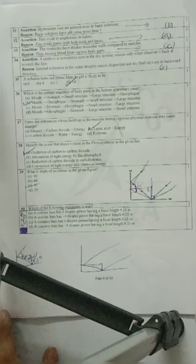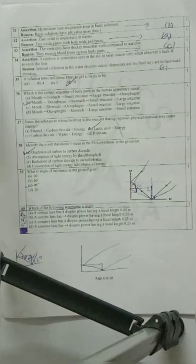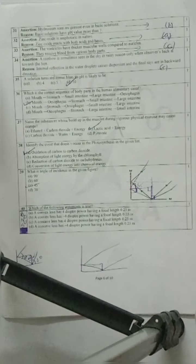Question 32: Assertion - Zinc oxide is amphoteric in nature. Reason - Zinc oxide reacts with both acid and basis. Yes, true. Amphoteric means what? Those which react with both acids and bases. That's why they've given the reason absolutely correct. Amphoteric means those that react with both acids and bases. That means option A is your correct option - both assertion and reason are correct and reason is the correct explanation of assertion.